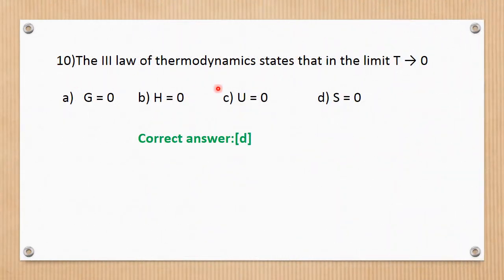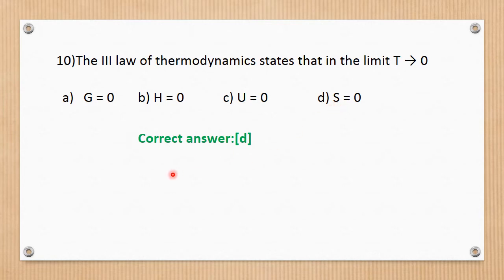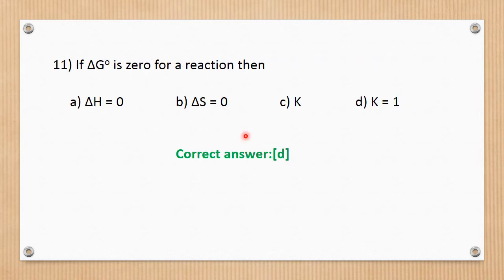Question number 10. The third law of thermodynamics states: as T tends to zero, for a pure perfect crystalline substance, the entropy S equals zero at absolute zero temperature. The correct answer is D.